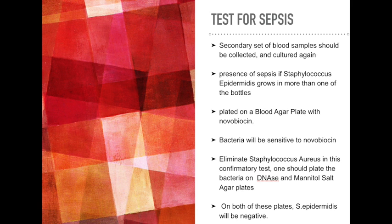To eliminate Staphylococcus aureus in this confirmatory test, one should plate the bacteria on DNase and mannitol salt agar plates. On both of these plates, Staphylococcus epidermidis will be negative. Moreover, this would prove that the source of sepsis was caused by the organism at the site of the wounded area, yet it is not clear if sepsis is even present without performing these tests first.